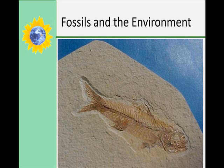Fossils also give us information about the ancient environment in which the organisms lived. For example, coral grows only in warm tropical waters, so if you found fossilized coral, you'd know that at some point there was a warm tropical marine environment there. Fossilized woolly mammoths would indicate a cold continental environment. This is an example of a fossil fish found in Wyoming, which means Wyoming was once covered by a small inland sea — this specimen is related to the herring group.